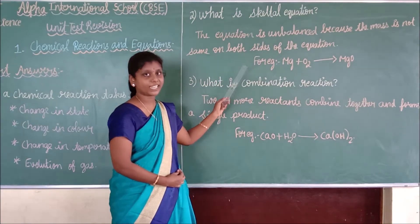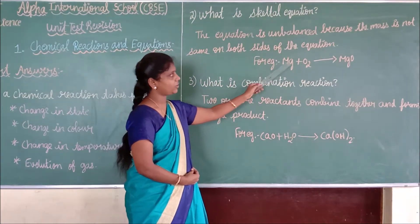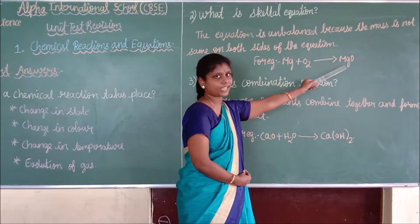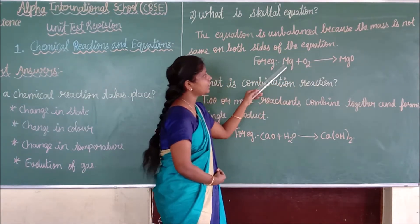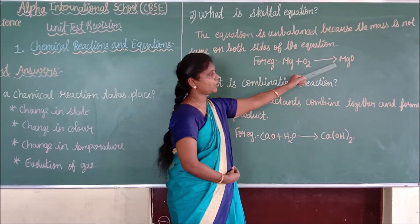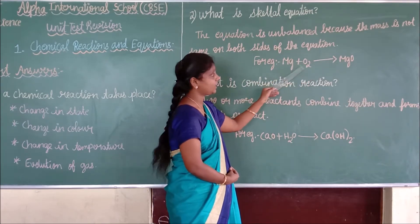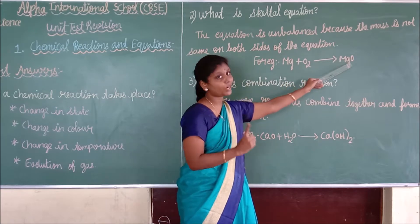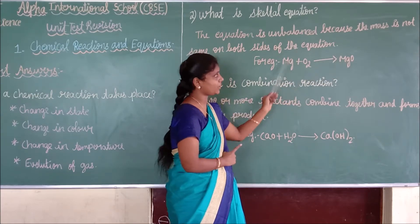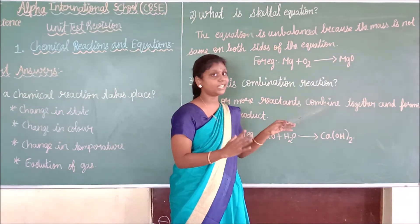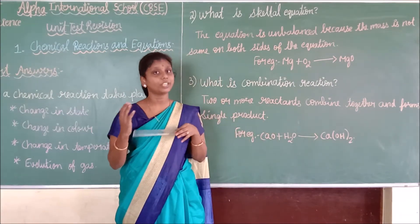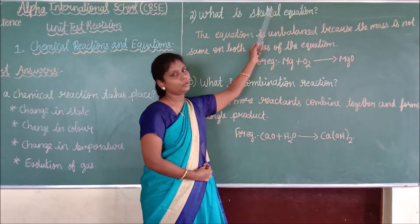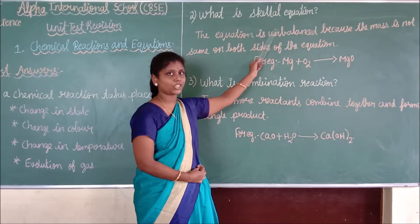The example of a skeletal equation is: magnesium plus oxygen gives magnesium oxide. Here there is one magnesium on each side, but there are two oxygens on the left and only one on the right. So this equation is not balanced — that is why we call it a skeletal equation.